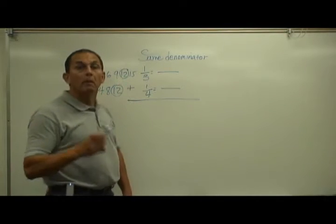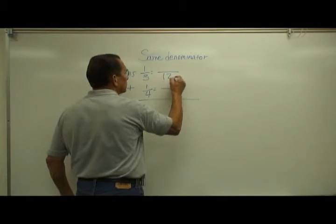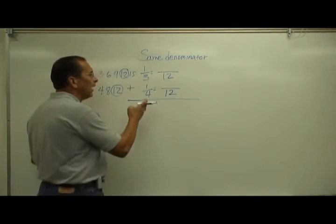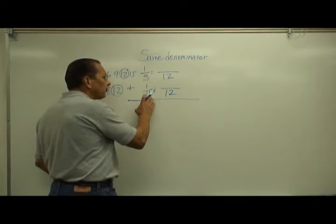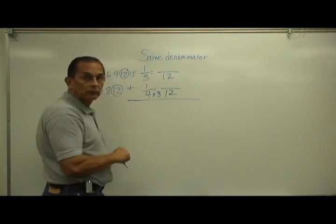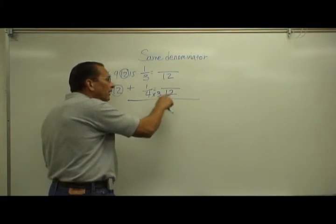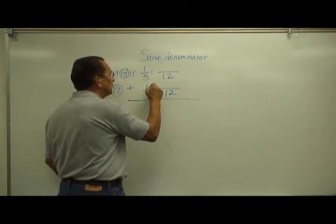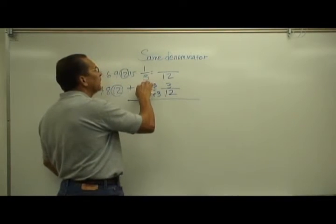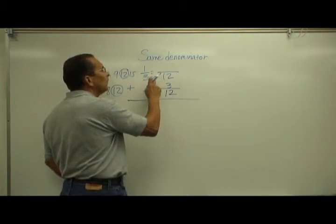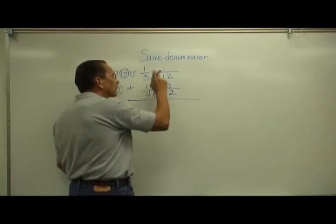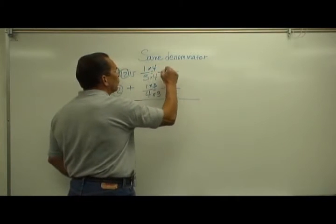This twelve is going to be my new denominator. Now it's really quite simple from there. I write four times what number? Four times three equals twelve. And whatever I do to the bottom of my fraction, I do to the top — one times three is three. Then three times what number? Four equals twelve. Whatever I do to the bottom, I do to the top — one times four is four.